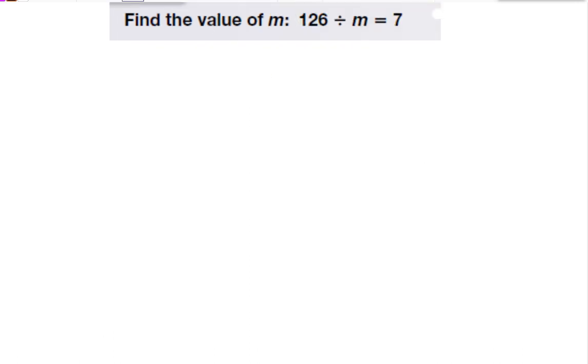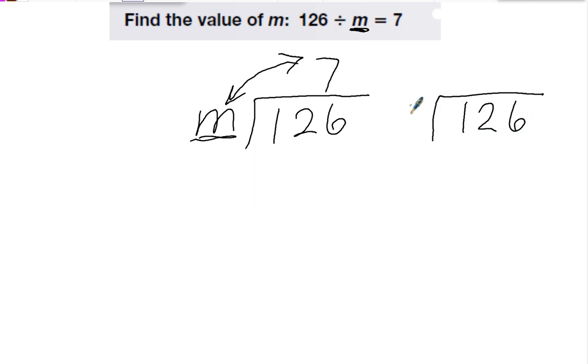In this case, the divisor is missing. Little M is the divisor. If I wrote this with a division box, it would look like this. 126 divided by M equals 7. When the divisor is missing, or the number outside the box, I need to divide to find the answer. I'm going to switch these two numbers. So I'm going to do 126 divided by 7 equals...